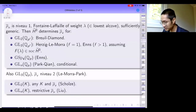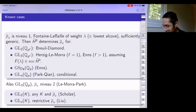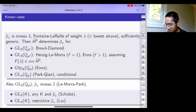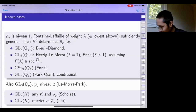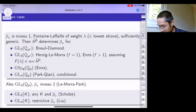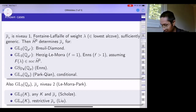What is known about question two? In these cases, you know that H-tilde-0 determines rho-bar_v. There are roughly two sets of results. The first sort applies to particular kinds of rho-bar_v that are Barsotti-Tate of some weight and sufficiently generic.